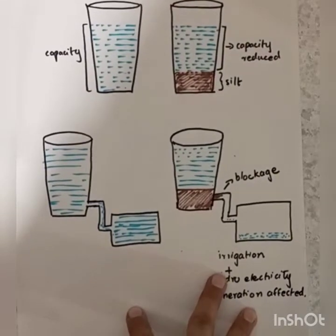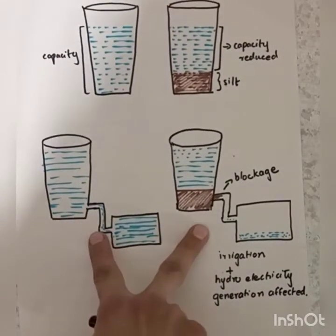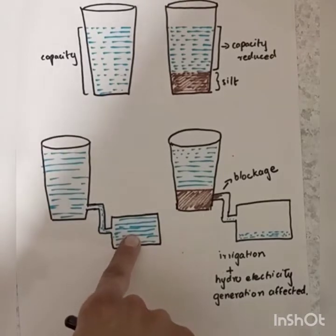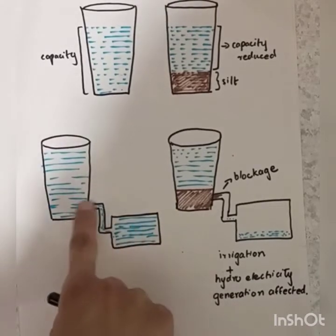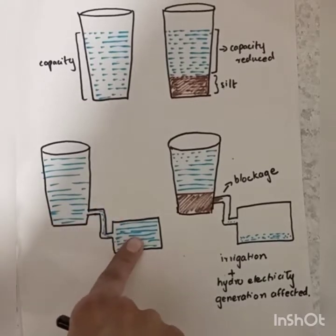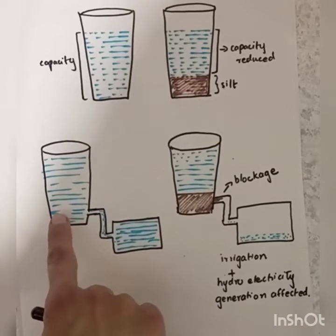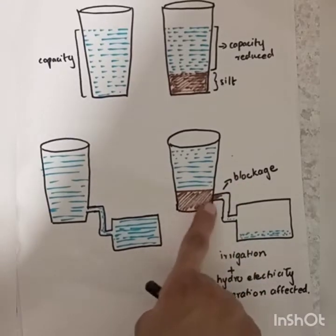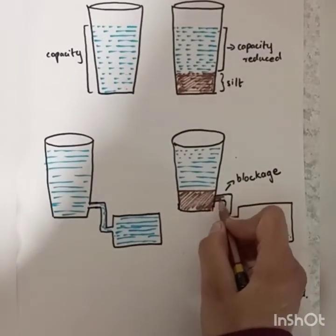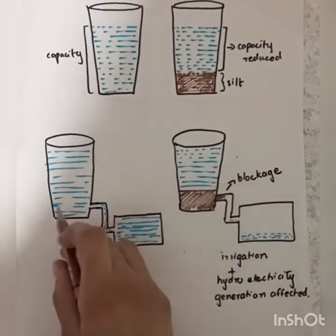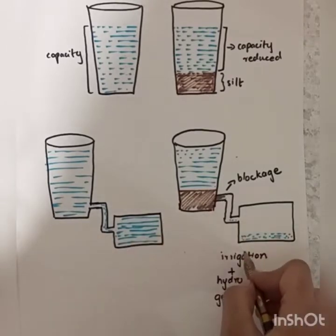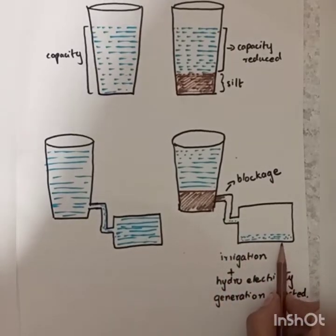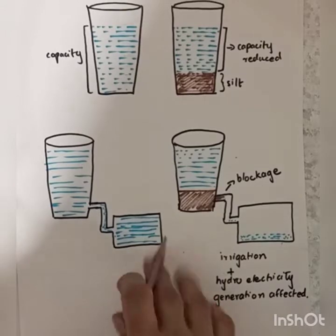Another thing that happens — look at figure number two. We usually use rivers as a means of irrigating our lands. Suppose this is the river, this is the land, and this is a canal connecting the river to the land. Now if the riverbed gets clogged by silt, this canal gets blocked. Water that was freely flowing towards the land in the first case will not be able to do so in the second case — there will be reduced flow of water to the land. This is another problem caused by siltation.